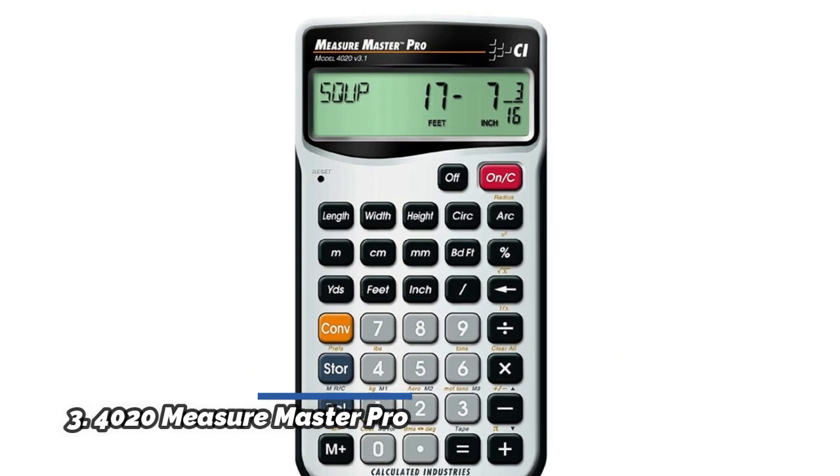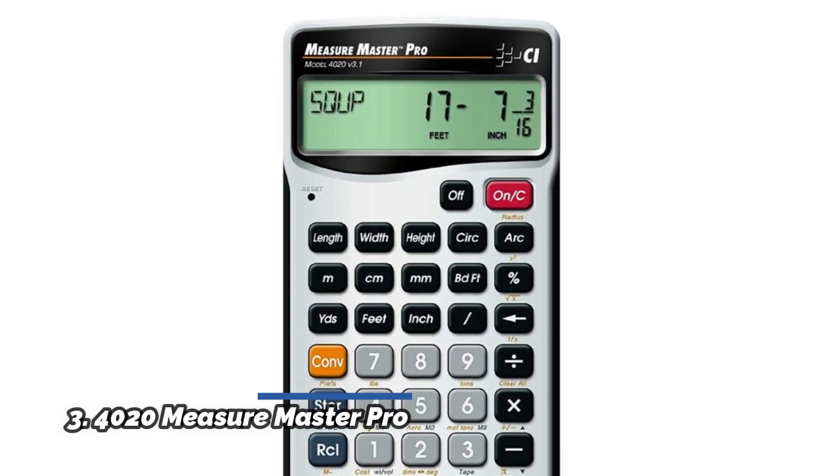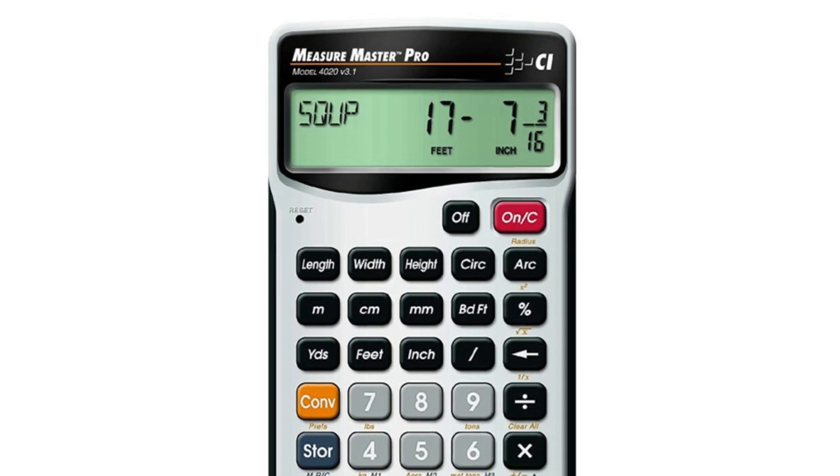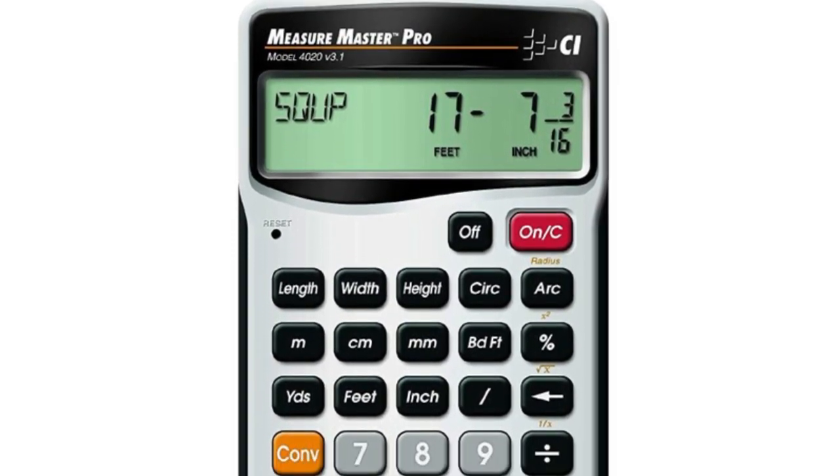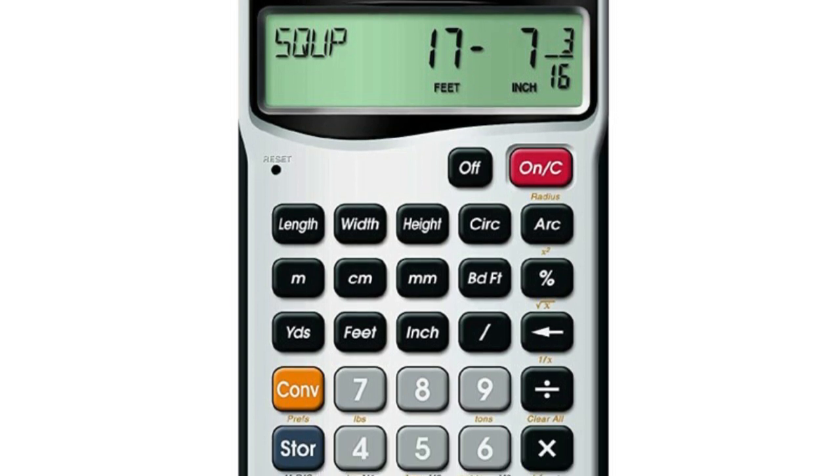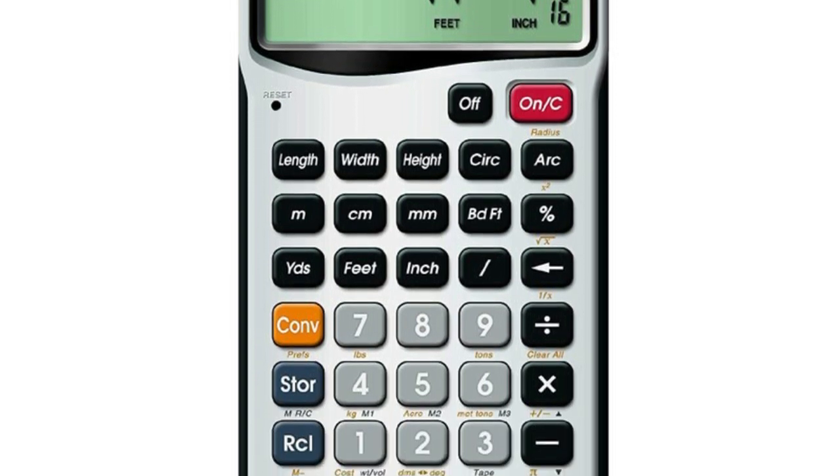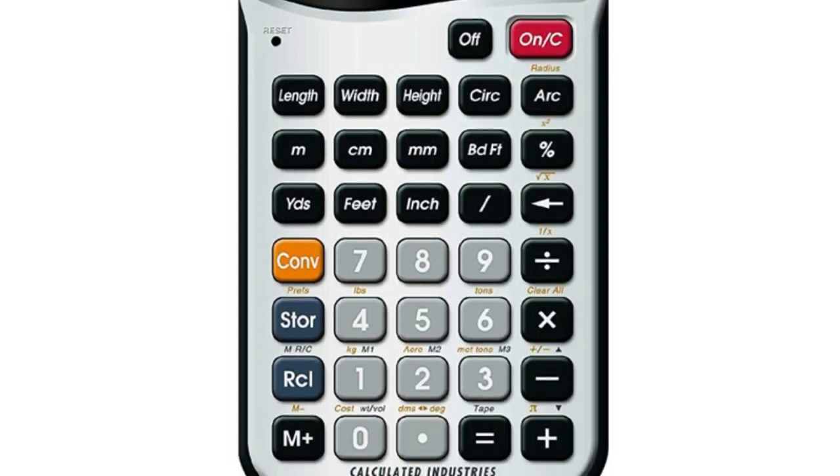Number 3, 4020 Measure Master Pro. Easily convert between dimensional formats including U.S. imperial and metric to help you work with material and plans from global suppliers. Regardless of the measuring units used, with a push of a button, the calculator can change them into the measurement types you prefer to work in.